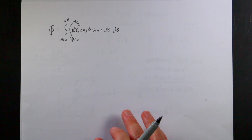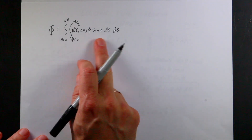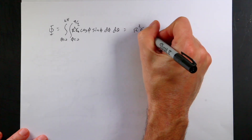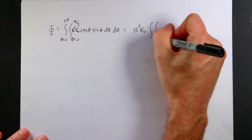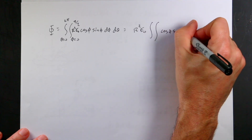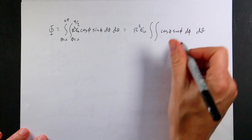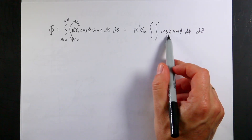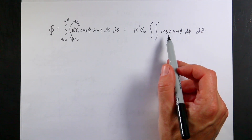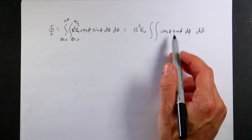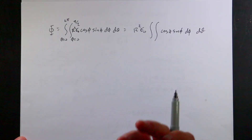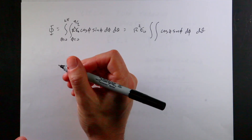Let's integrate over φ first. I can factor R-squared e0 out front to make this look a little bit better. The more you do integrations, the more you see tricks and possible substitutions. In this case, if I have a derivative and a function and I can make a substitution with the derivative there, I'll be okay. So let's make the substitution u equals cosine φ.